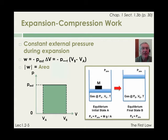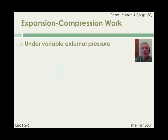We now turn our attention to the situation where the external pressure varies during the expansion, as shown on the plot of p external as a function of volume. When the external pressure is not constant, we cannot write w equals minus p external times delta v, since p external takes different values as the volume of the substance is changing.